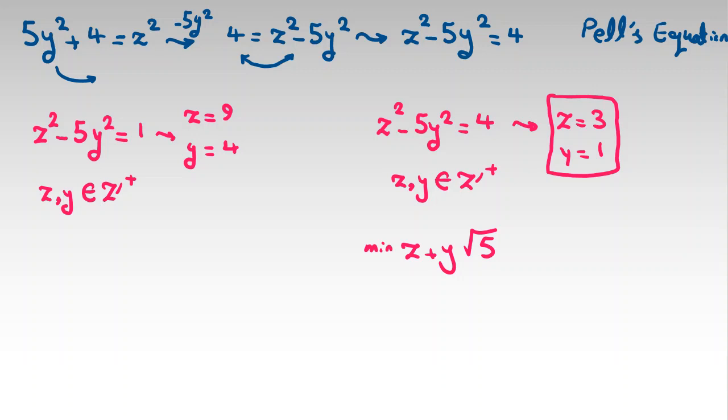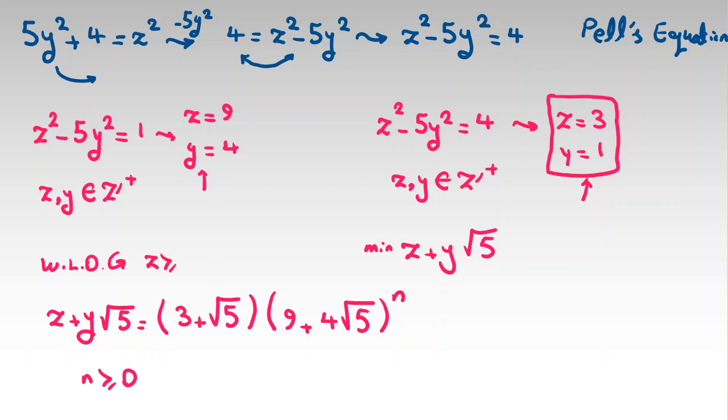Now, the general form will be z + y√5 = (3 + √5)(9 + 4√5)^n, where n can be any integer greater than or equal to 0. z can be positive or negative, y can be positive or negative. Without loss of generality, we can consider z is at least 0. Also, from assumption of the problem, y is greater than 0, it's a positive integer. So we should check different n and see what we have.